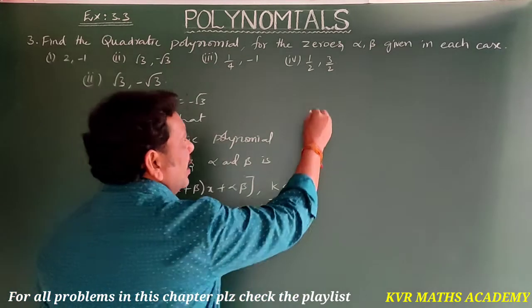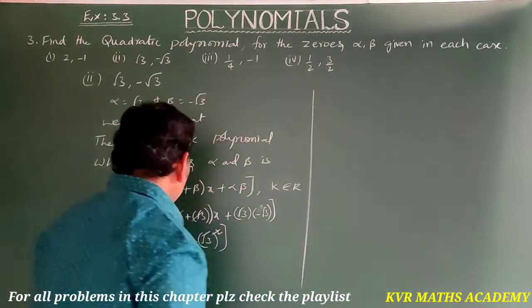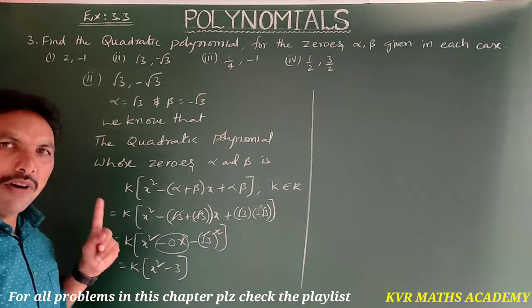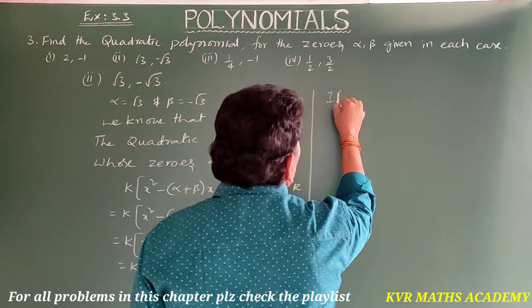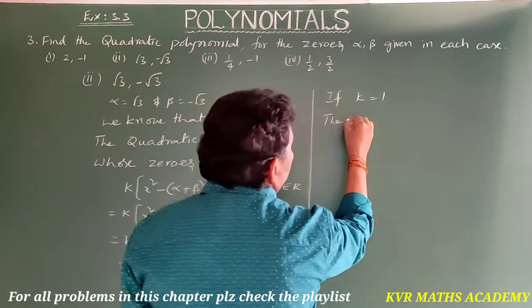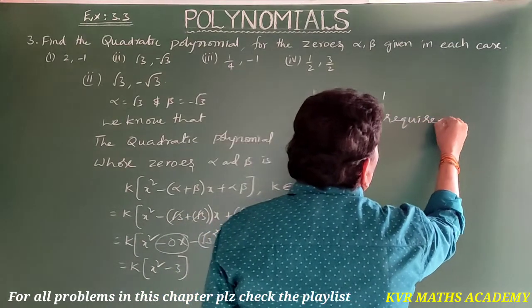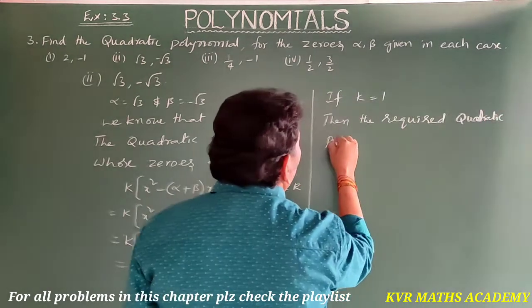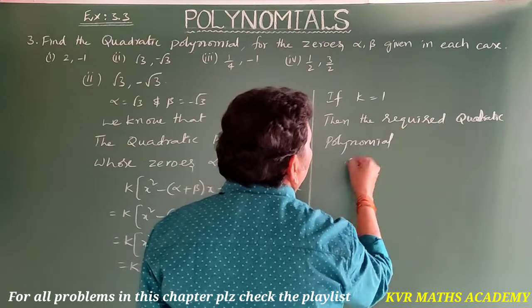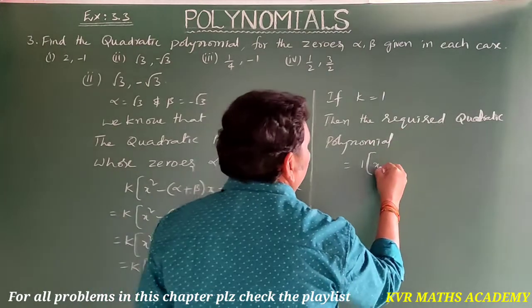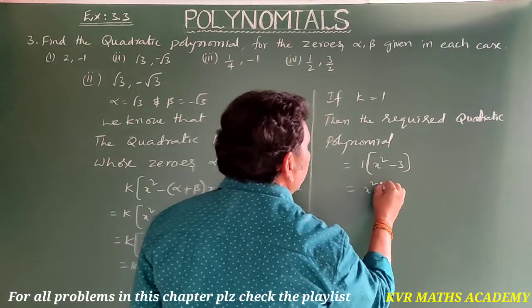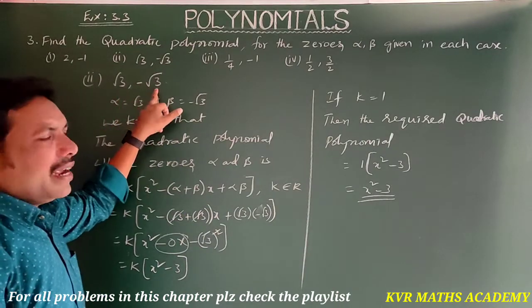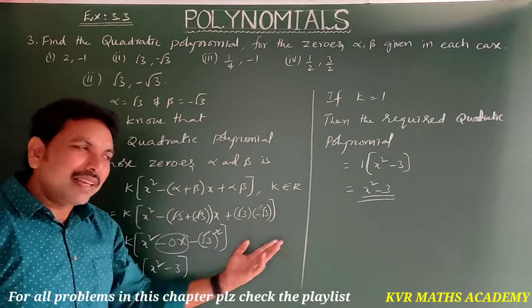Taking k = 1 since there is no denominator, the required quadratic polynomial is x² - 3. This is the required quadratic polynomial of zeros √3 and -√3.